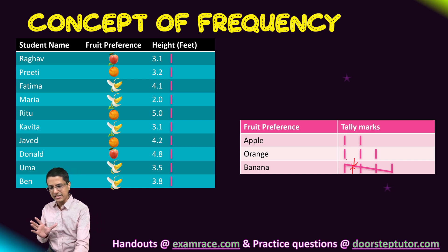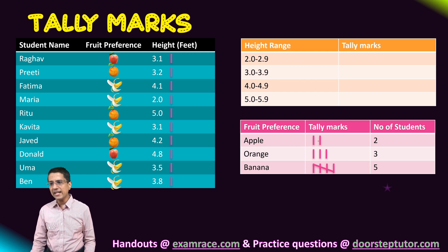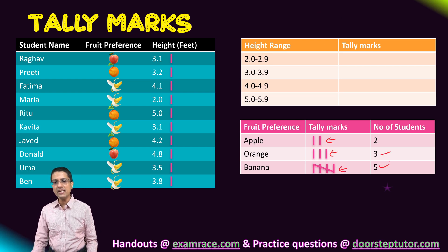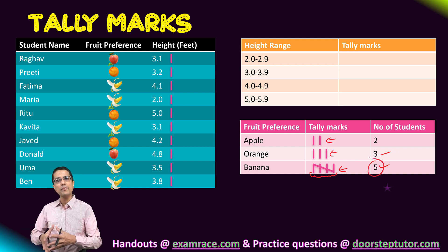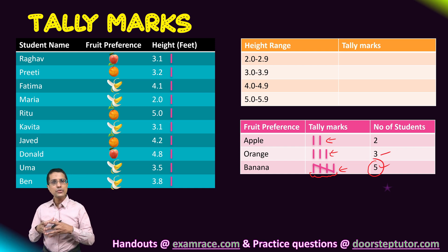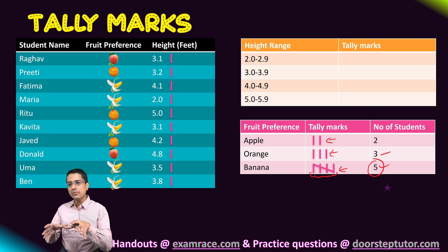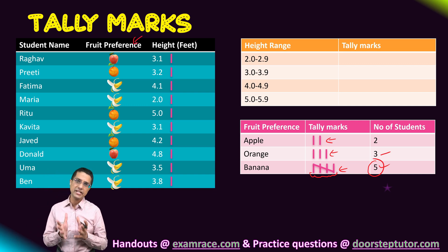Now that we have tally marks, counting becomes very simple. How many students liked apple? Two. How many liked orange and how many liked banana? We can similarly count those. Notice that a group of four tally marks with a cross can simply be read as five. So our counting becomes easier when we have grouped our tally marks this way. We have now understood how to count frequency for a categorical variable like fruit preference.